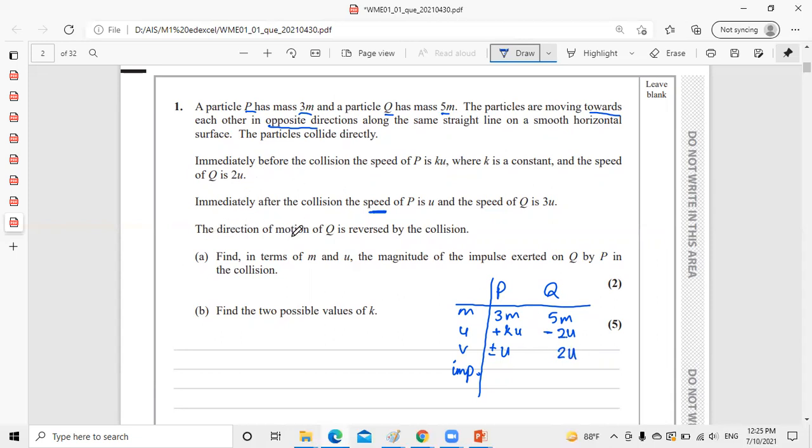They said that the direction of motion of Q is reversed. Reverse means if it's negative, it becomes positive. If positive, it becomes negative. They didn't mention what happened to the direction of motion of P after collision. So these are the information we have from the question.